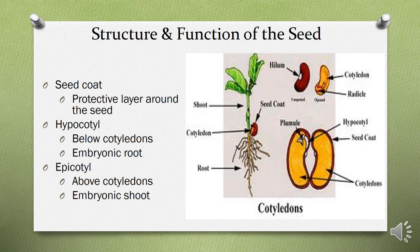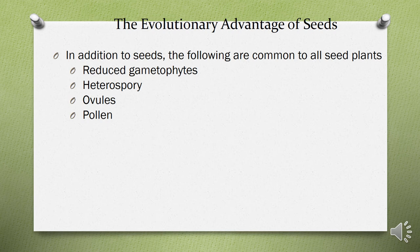The epicotyl is the part of the seed present above the cotyledons and is known as the embryonic shoot. The evolutionary advantages of seeds include the reduced gametophytic generation, the development of heterospory — the presence of gametes that can be distinguished into male and female — production of ovules used to propagate plants, and pollens involved in the pollination process.